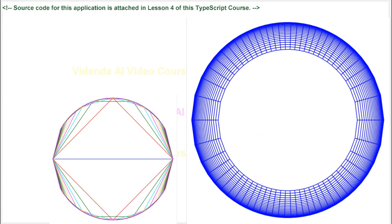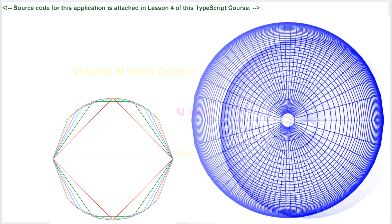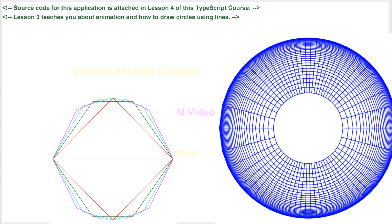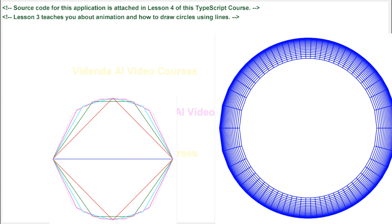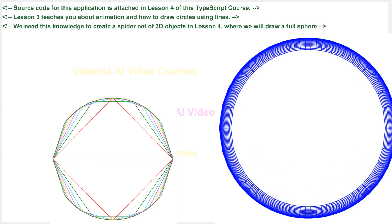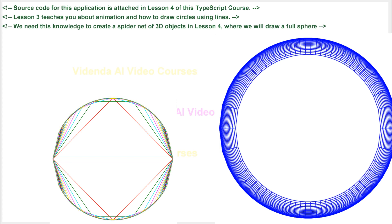Source code for this application is attached in Lesson 4 of this TypeScript course. Lesson 3 teaches you about animation and how to draw circles using lines. We need this knowledge to create a spider net of 3D objects in Lesson 4, where we will draw a full sphere.